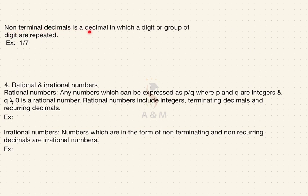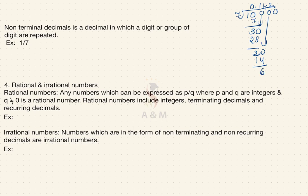Next is non-terminal decimals — decimals in which a digit or a group of digits are repeated. Example: 1 divided by 7. Since 1 is small, add 0 on the dividend and a decimal point on the quotient. 7 ones are 7, remainder 3; bring down 0 to get 30; 7 fours are 28, remainder 2; add 0 to get 20; 7 twos are 14, remainder 6; add 0 to get 60; 7 eights are 56, remainder 4. The value of 1/7 is 0.1428... and you never get remainder 0, so it is a continuous, non-terminal decimal — repetitive in nature.